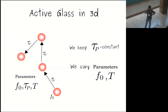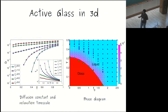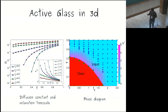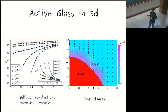We keep τ_p constant and vary only F₀ and T. Looking at time scale versus temperature: without any activity it diverges at some point. At some activity, the time scale changes and diverges at a different point — meaning the glass transition temperature is changing. The extrapolated transition points form a line that looks like a quadratic, which can be rationalized from a simple calculation. This means at very low temperature and low activity one has a glass-like phase, and if you increase temperature or activity you go to a liquid-like phase.